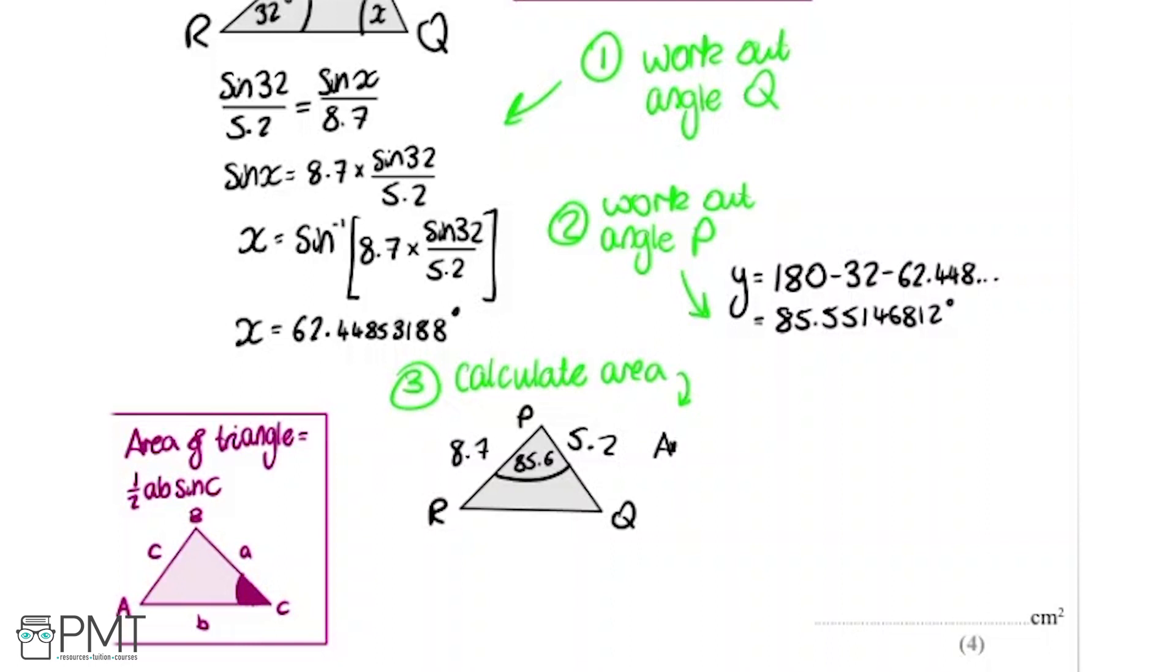I've done a little sketch here of the triangle with all the information we need. The area is going to be half multiplied by these sides, so 5.2 multiplied by 8.7, and multiplied by the sine of this angle. I'm going to use the full number when I put it in the calculator just to make it as accurate as possible, but just for writing, I'm going to do 85.6 here. Doing that, we get 22.55185522. If I do that to three significant figures, that's 22.6 centimeters squared.